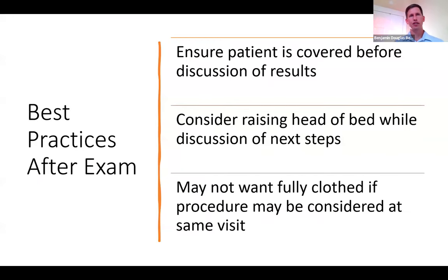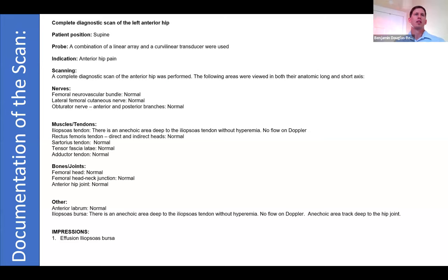This completes our anterior hip exam. Make sure the patient is covered before discussing results, though you may want to keep them semi-draped if proceeding to a procedure. My standard anterior hip protocol is simple and driven by smart lists. The basic components discuss where I scanned, how I positioned the patient, what probe I used, the indication for scanning, and then a discussion of the areas examined.